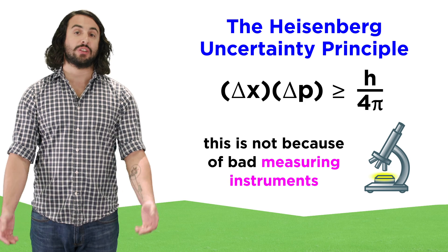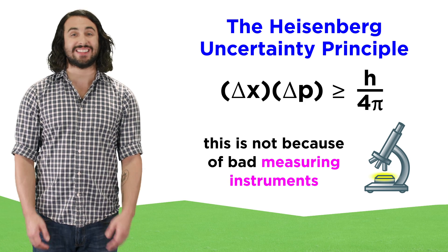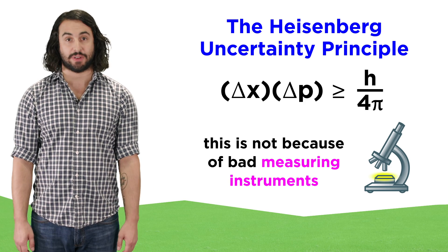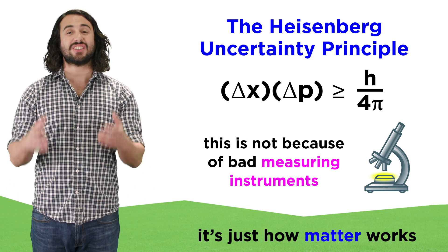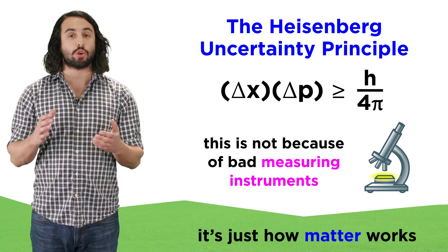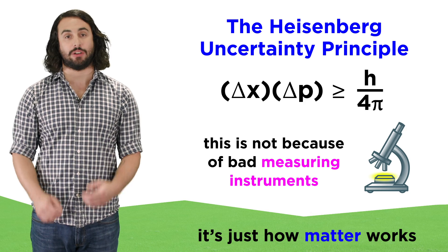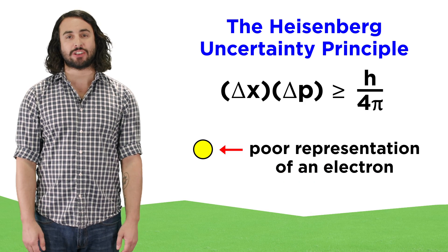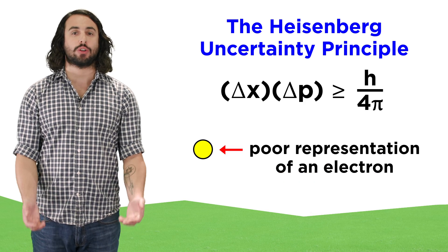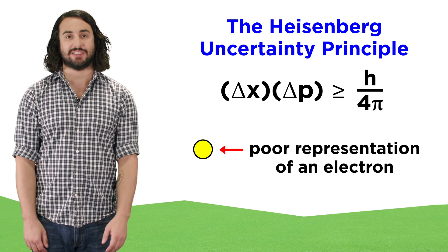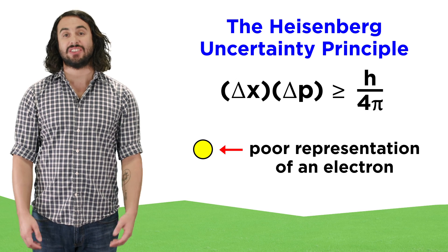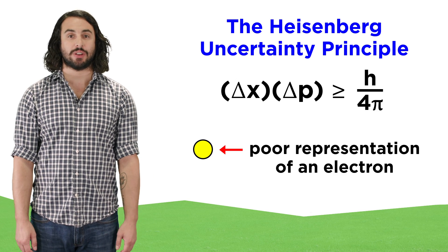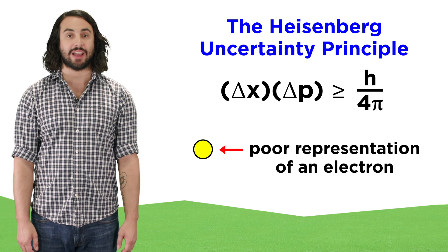The important thing to realize is that this has nothing to do with our measuring instruments. This is a fundamental quality of matter. We can't reduce an electron to particle-like determinacy, as it is also a wave, as was demonstrated by the double slit experiment.